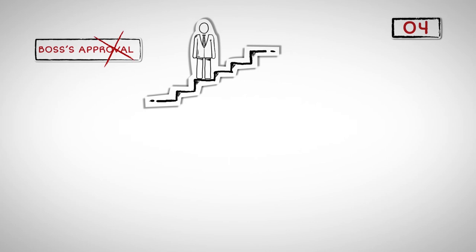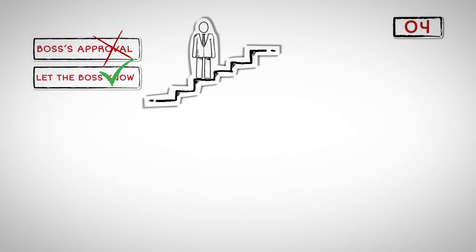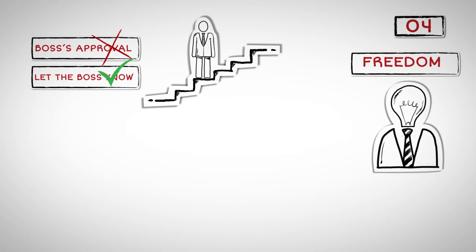Number four. Netflix's mantra, Don't seek to please the boss, means that employees don't need the boss's approval to move forward, but they should let the boss know what's going on. If your employees are excellent and you give them freedom to implement the bright ideas they believe in, innovation will happen.